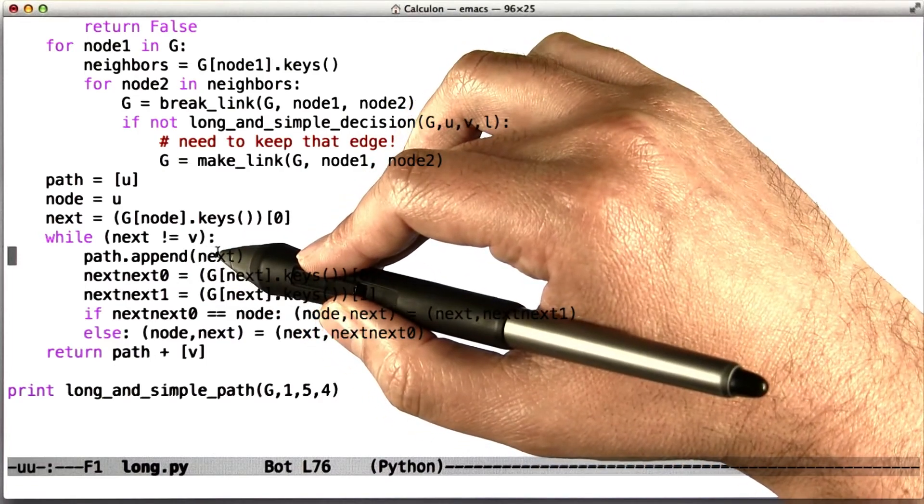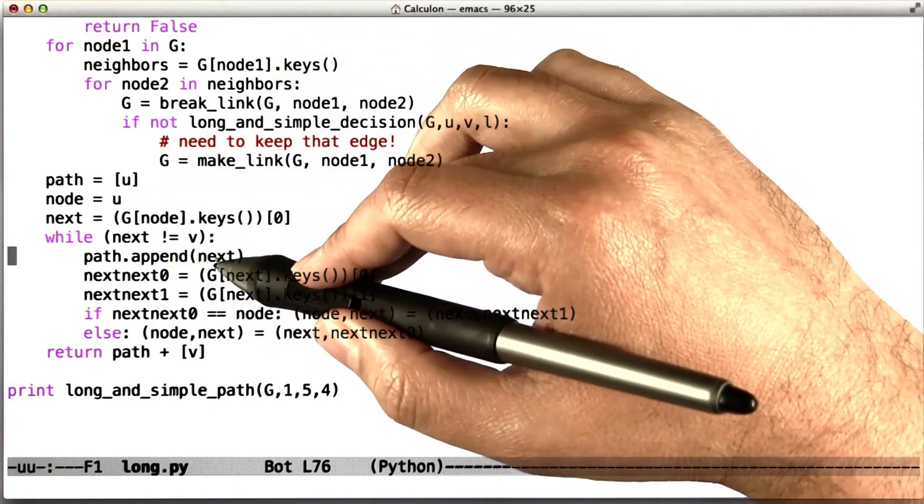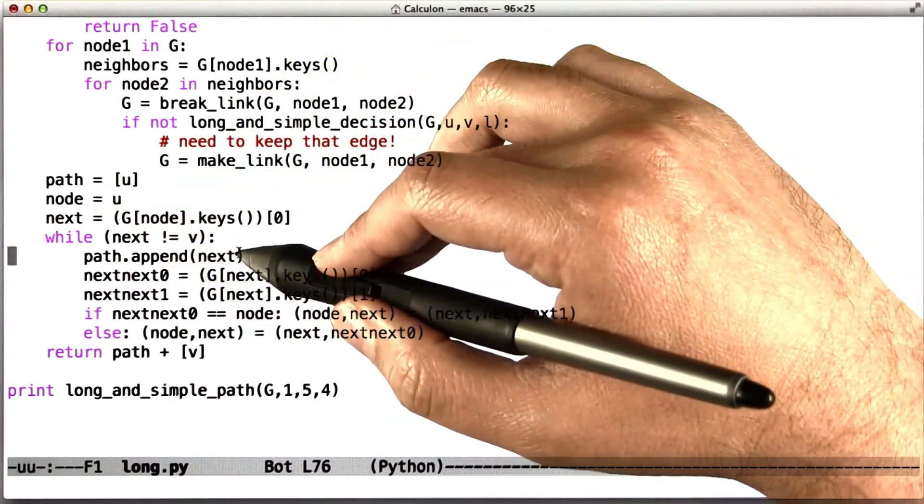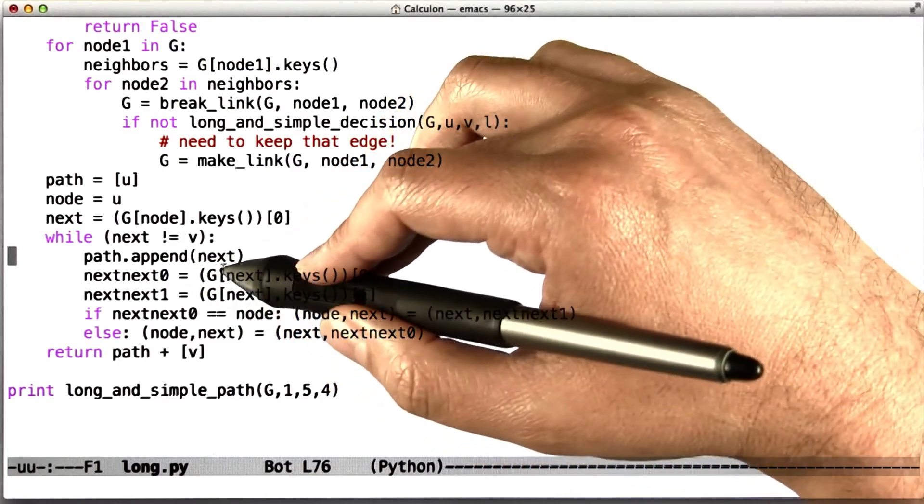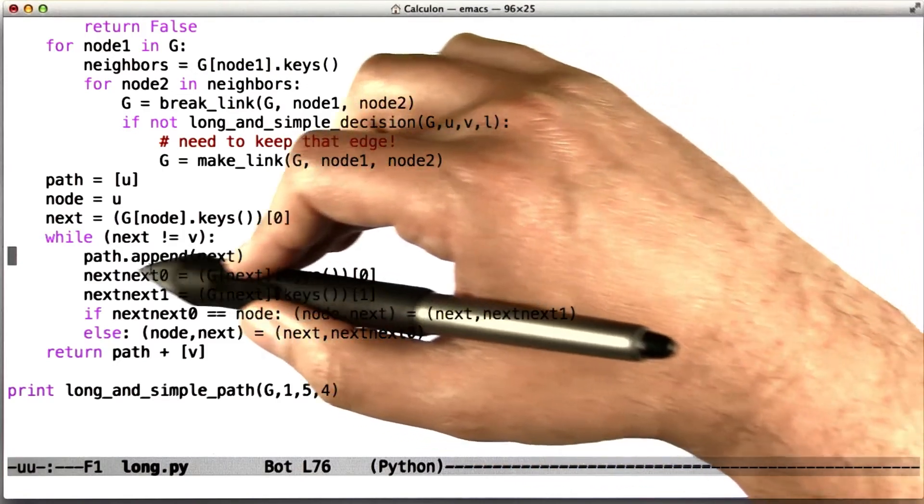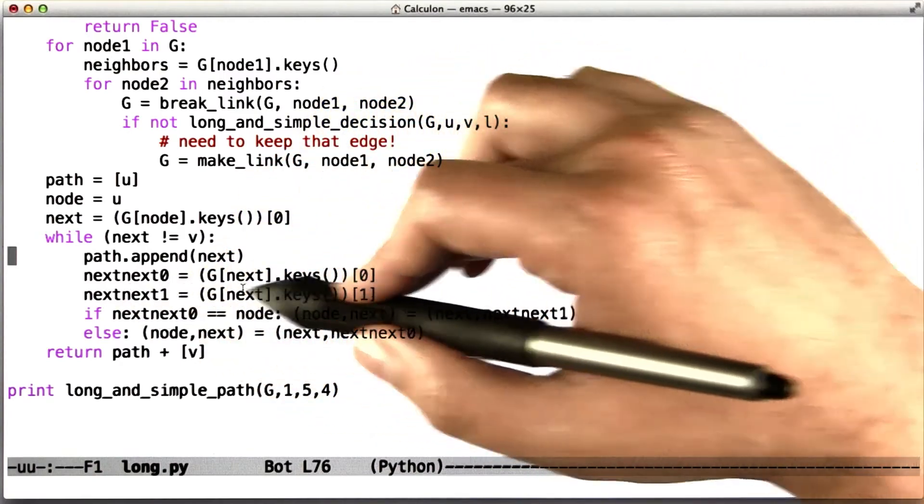This node next is going to have two neighbors. One is going to be the node we just came from, node, and the other one is going to be a new node that we haven't considered yet. So, just to figure out which one it is, what I did is I just pulled the two of them off. I said let next_next[0] be one of those neighbors, and next_next[1] be the other.